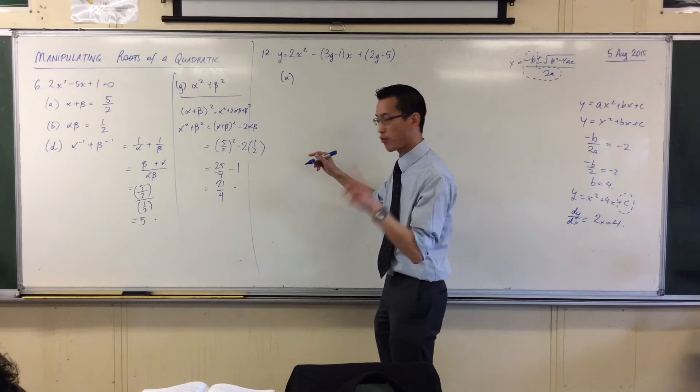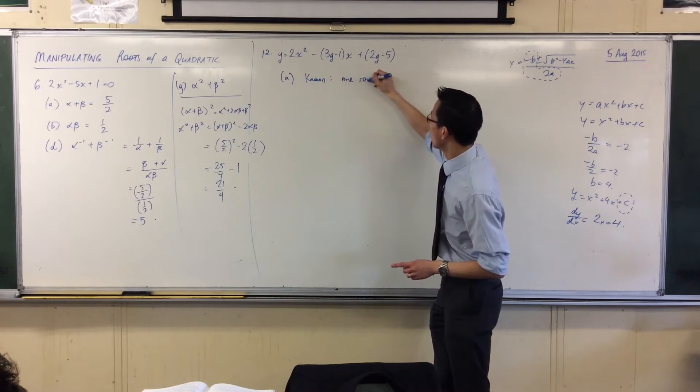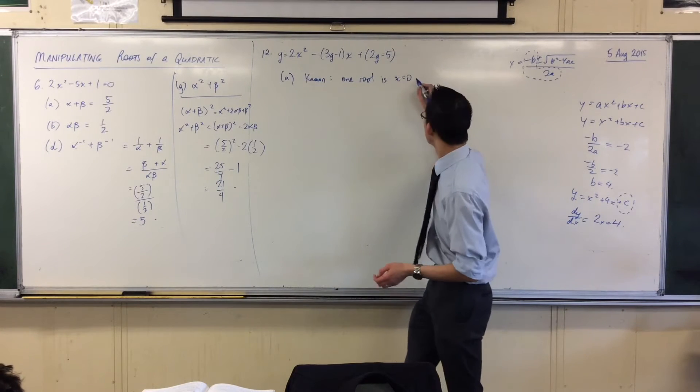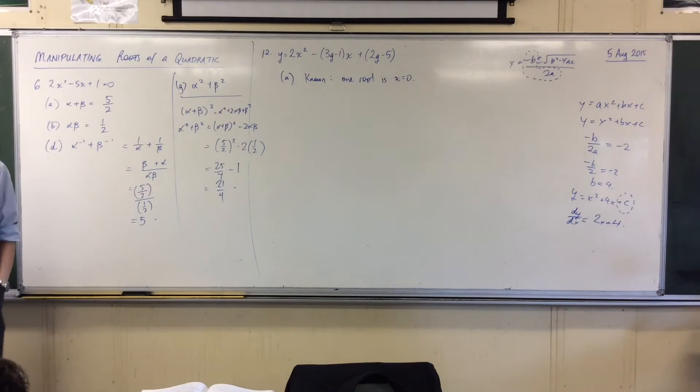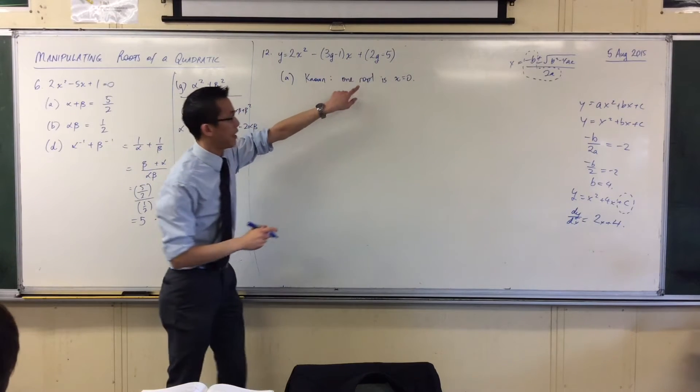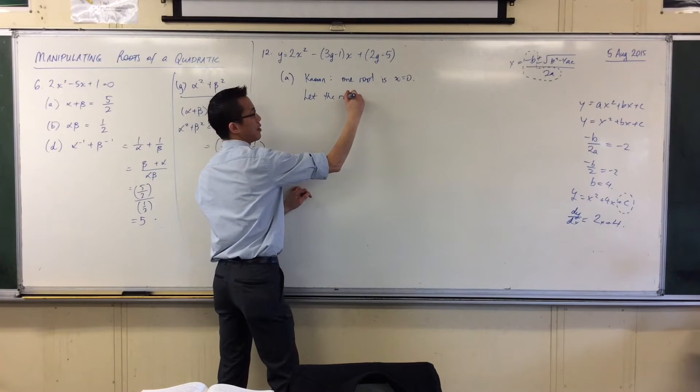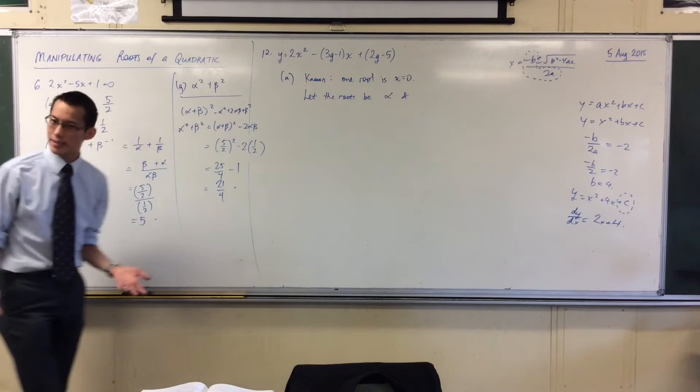What if we know that one root or one of the zeros is x is equal to zero? If you know that one of the roots is equal to zero, then I would say, I want to get a relationship between these coefficients and the roots. Well, I will begin my question by saying, let the roots be alpha, and I would normally say beta, but I know that one of the roots is zero, so I'm just going to make beta zero.